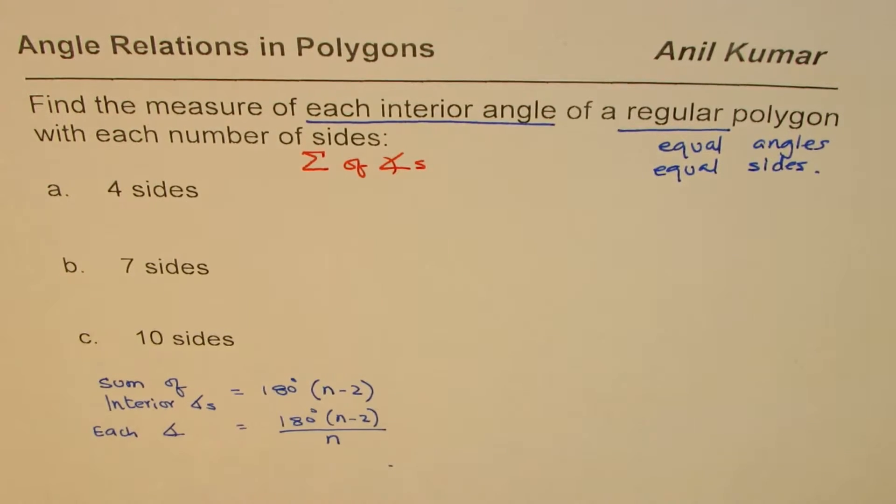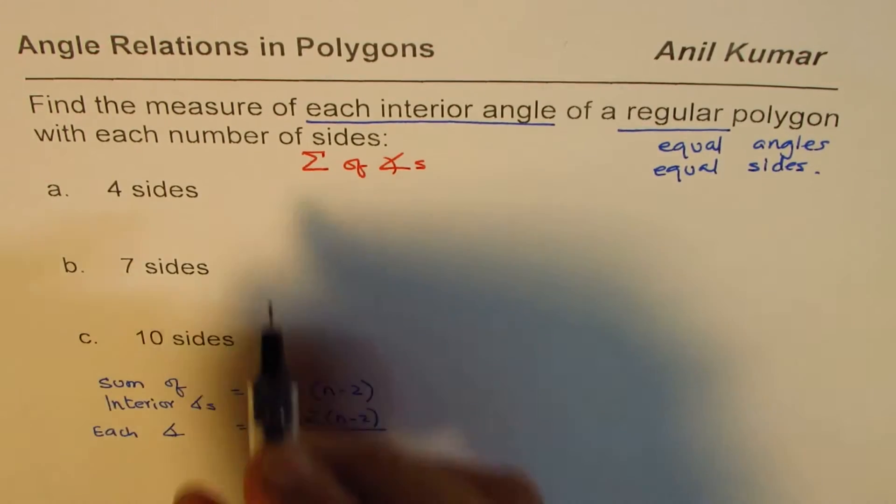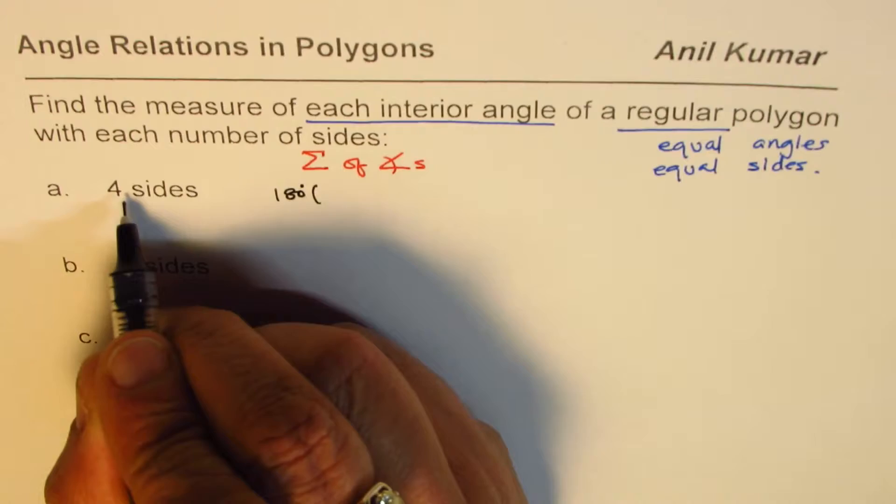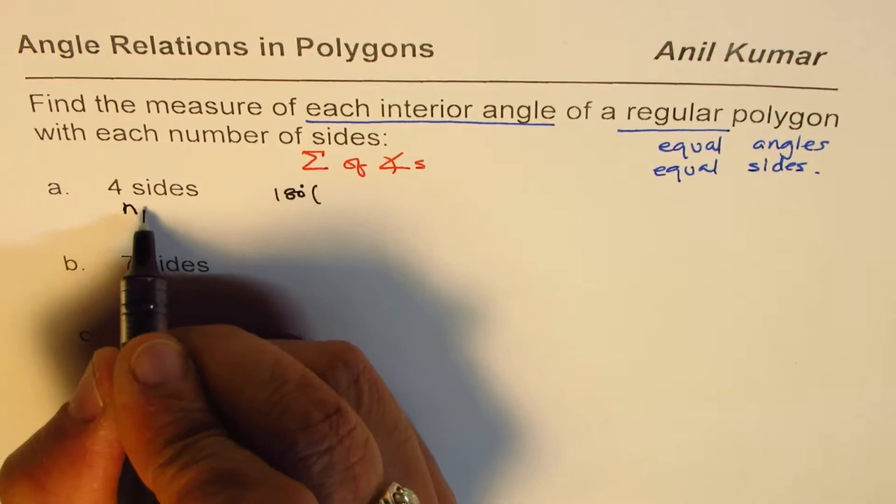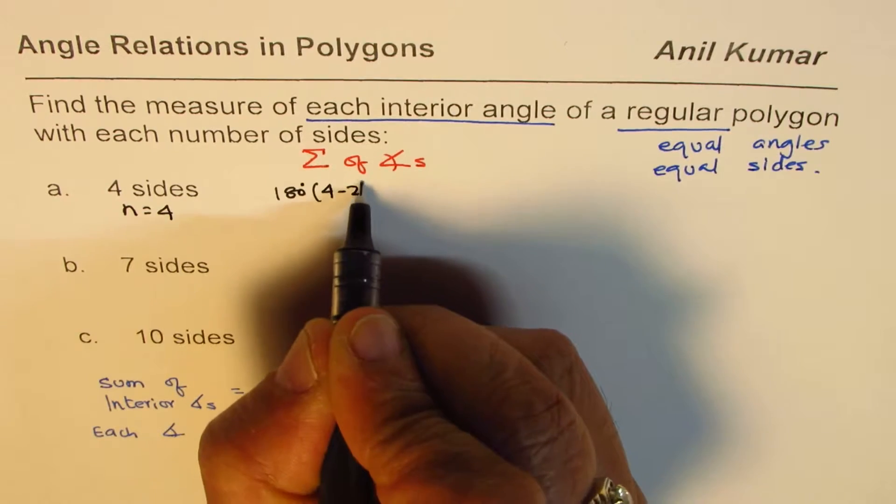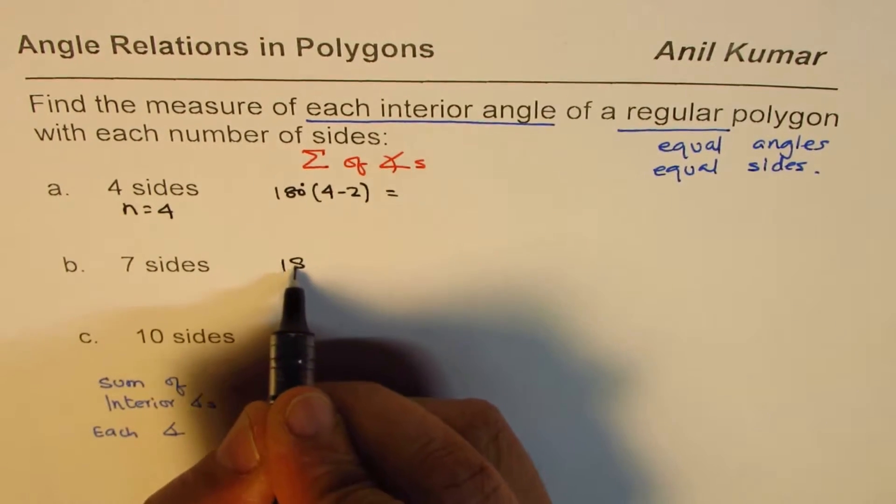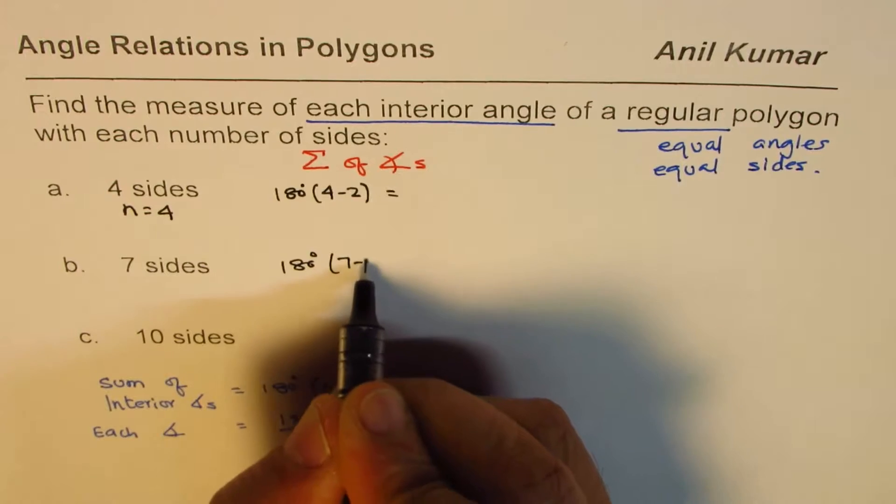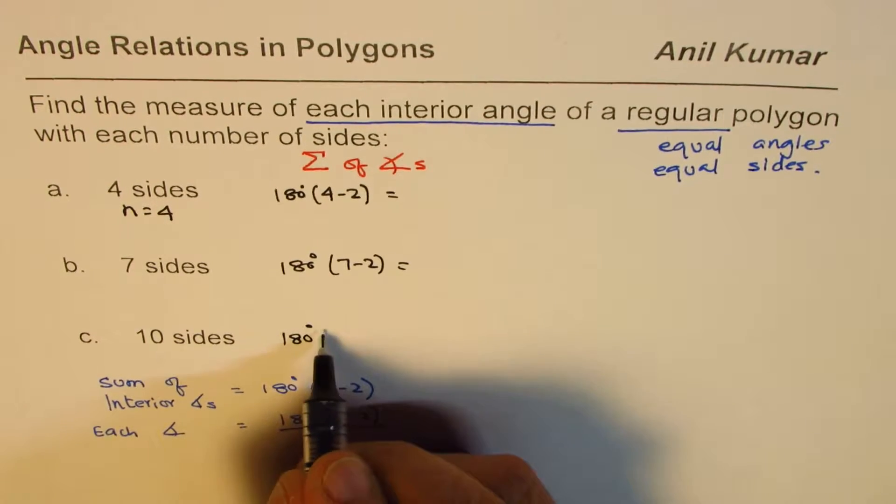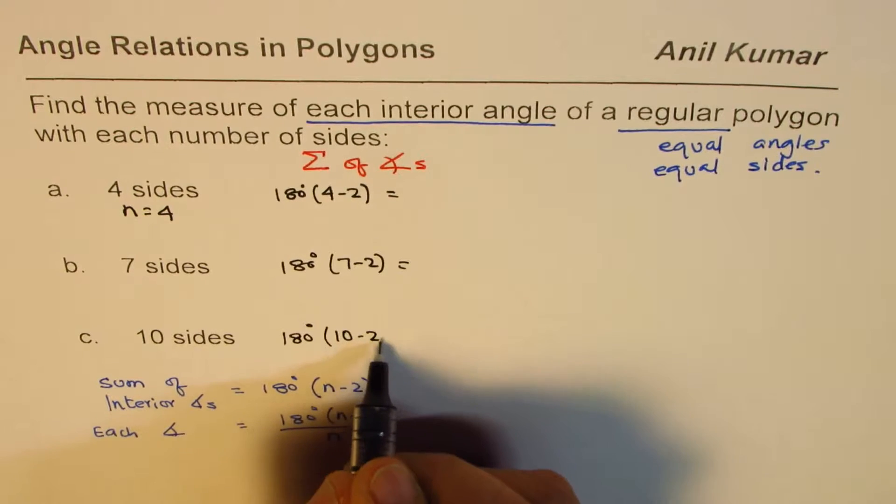And we will use this formula, which is 180 times n minus 2. n is 4 in this case, 4 sides, so 4 minus 2. The second one will be 180 degrees, 7 minus 2, and the third one will be 180 degrees, 10 minus 2.